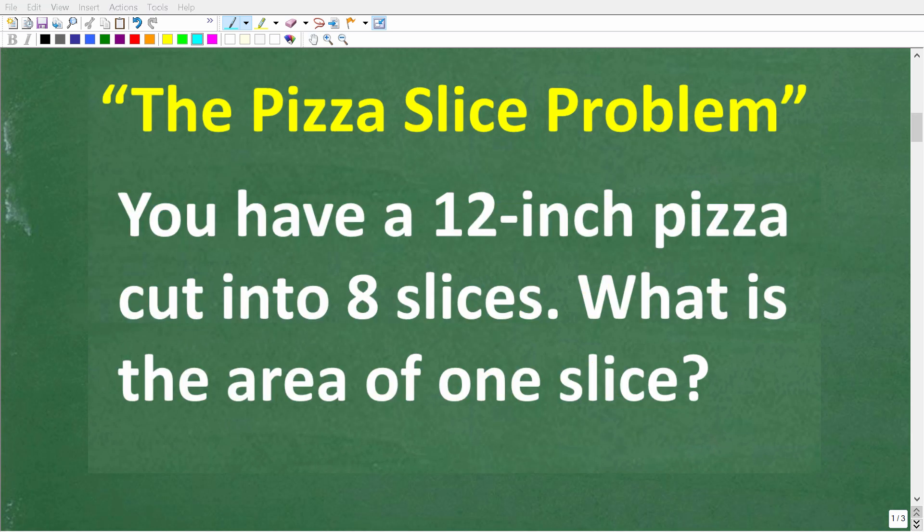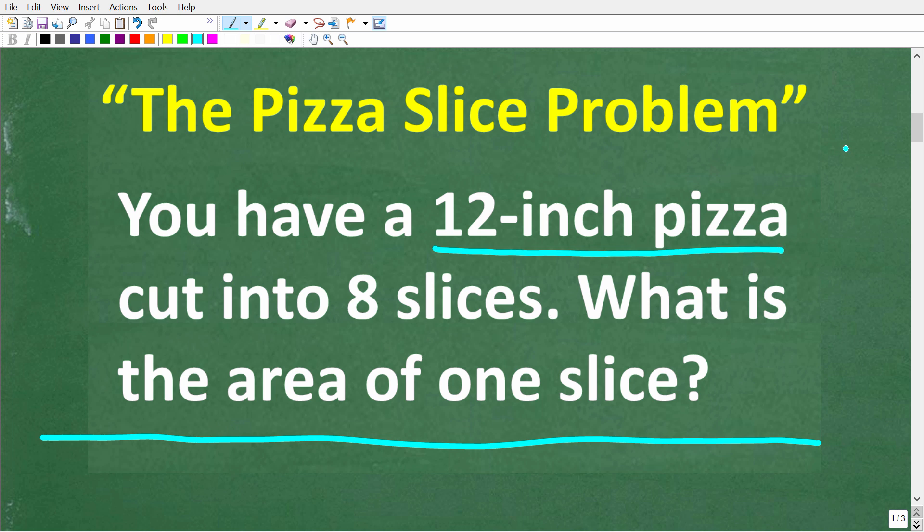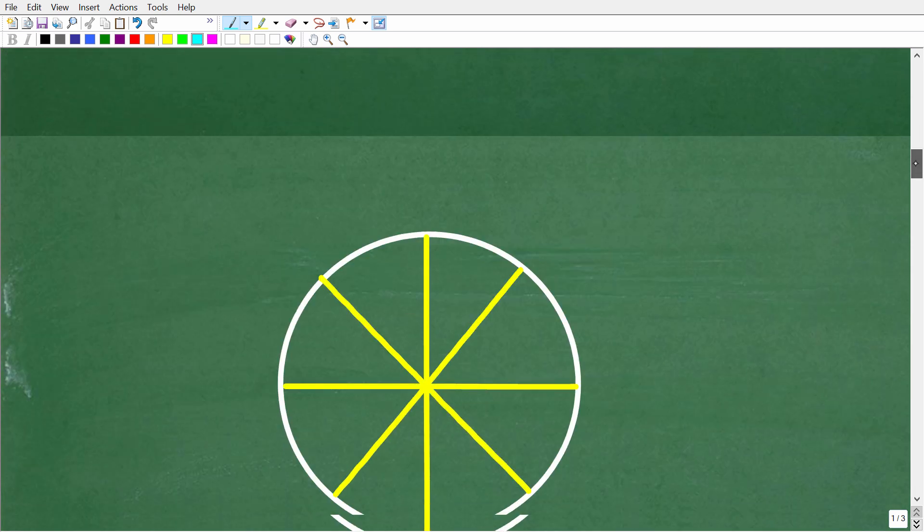Once you've read and understood the question what you want to try to do is visualize the problem because if you can see the problem oftentimes you can see the solution. So again we have this 12 inch pizza and a pizza is of course a circular shape but here we need to make the assumption that this pizza is a perfect circle and it has eight slices each with the exact same precise measure. The question is what is the area of one of these slices? So let's make a nice sketch and then think about the problem.